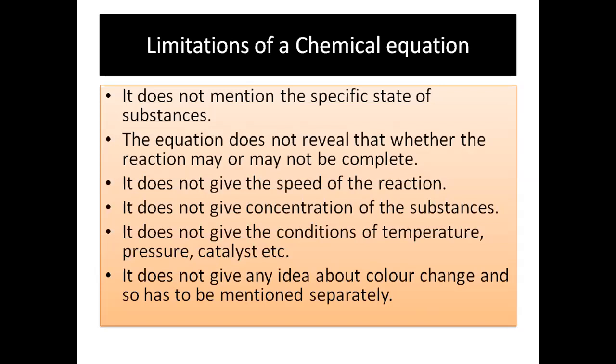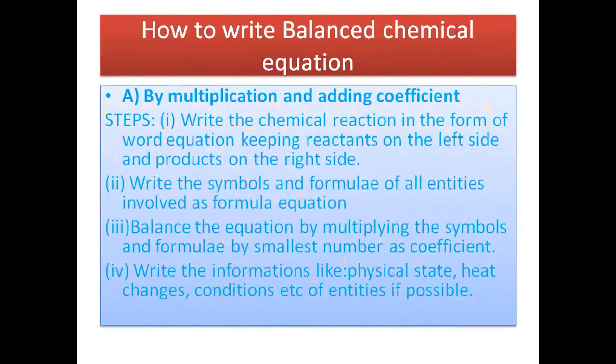Since writing the word equation every time is not possible, we write the formula equation. A formula equation needs to be in support of the law of conservation of mass, hence it needs to be a balanced chemical equation. We usually balance equations in two ways: first, identify whether the formula equation is a skeletal or balanced equation; then, by multiplying and adding coefficients, we can convert a skeletal equation to a balanced chemical equation.